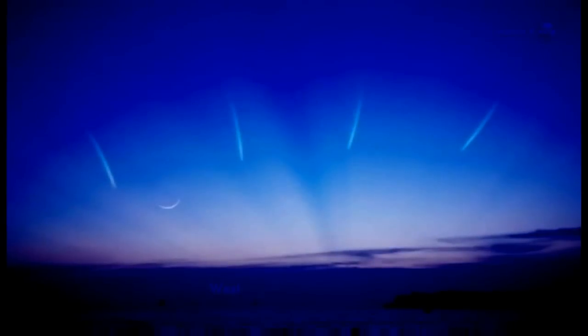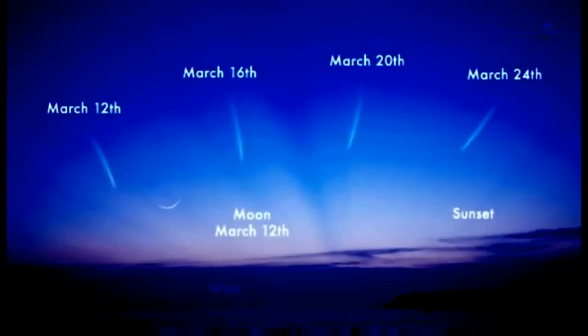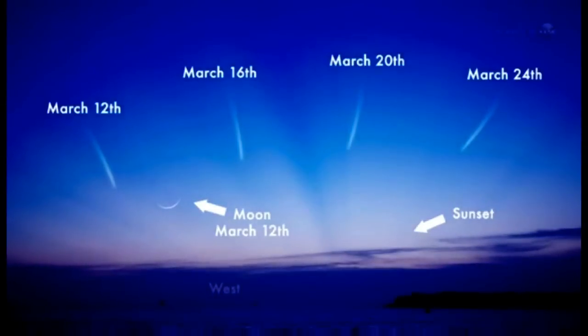The best dates to look may be March 12th and 13th, when Pan-Star emerges in the western sunset sky, not far from the crescent moon. A comet and the moon, together framed by the twilight blue, is a rare sight.